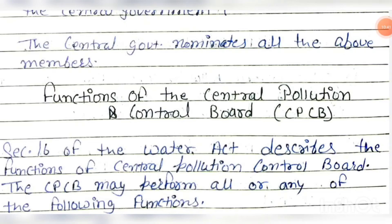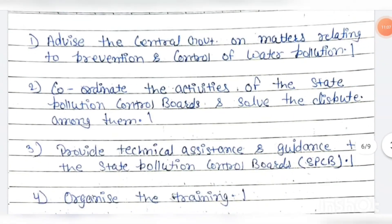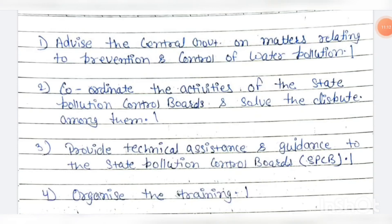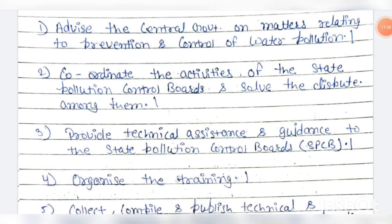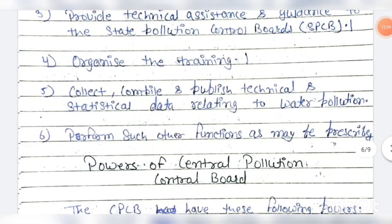Section 16 of the Water Act describes the functions of the Central Pollution Control Board (CPCB). The CPCB may perform all or any of the following functions: advise the central government on matters relating to prevention and control of water pollution; coordinate the activities of the state pollution control boards and solve disputes among them; collect, compile, and publish technical and practical data relating to water pollution; and perform such other functions as may be prescribed.